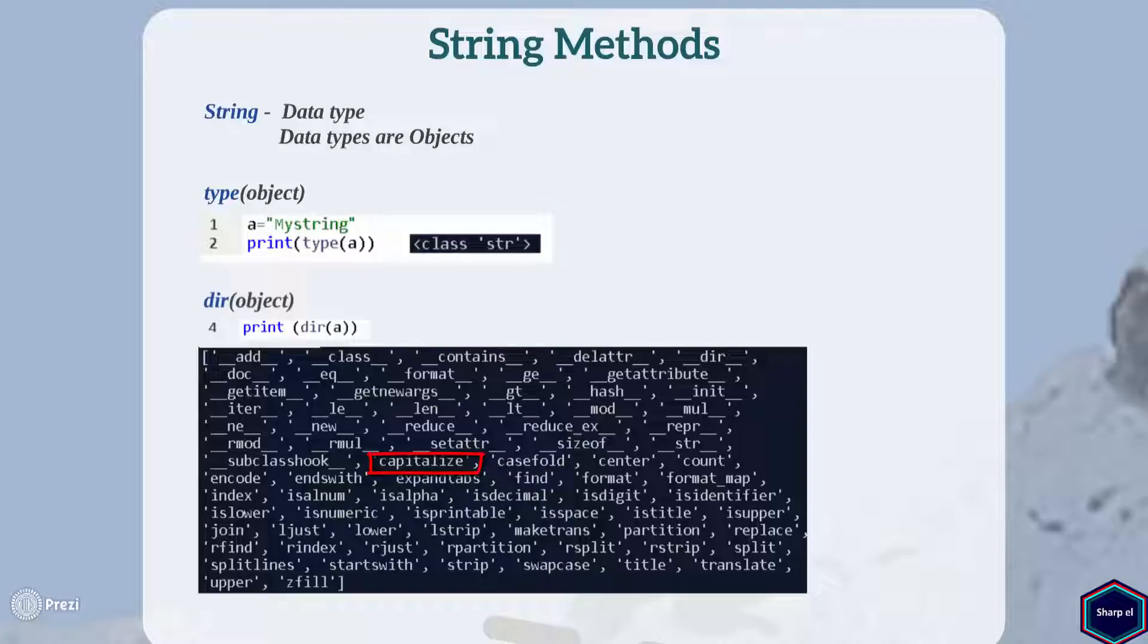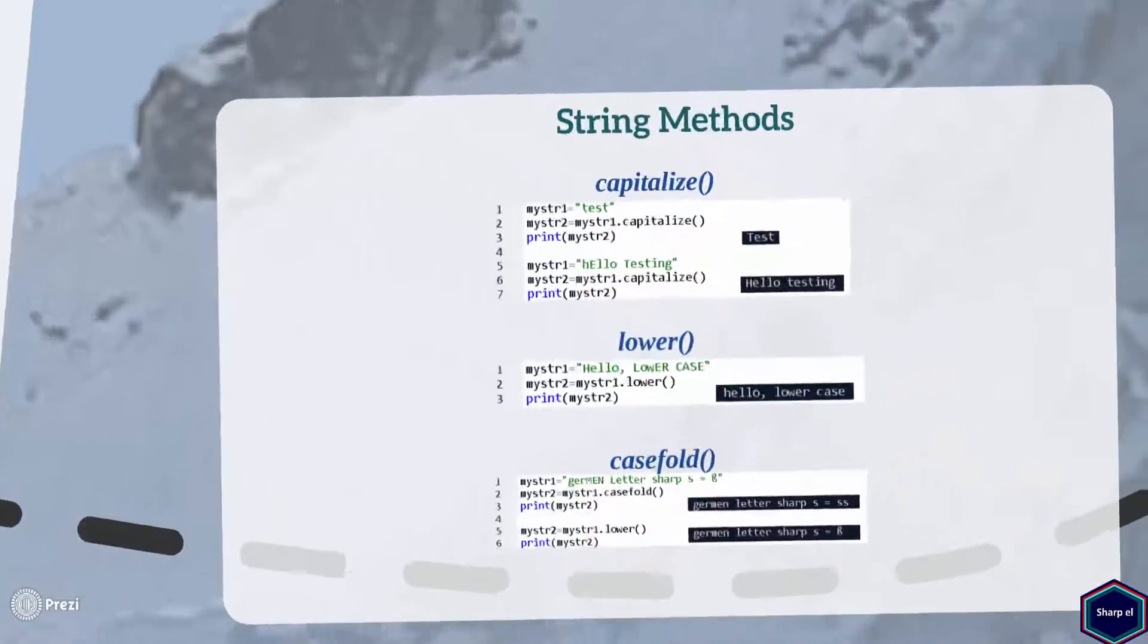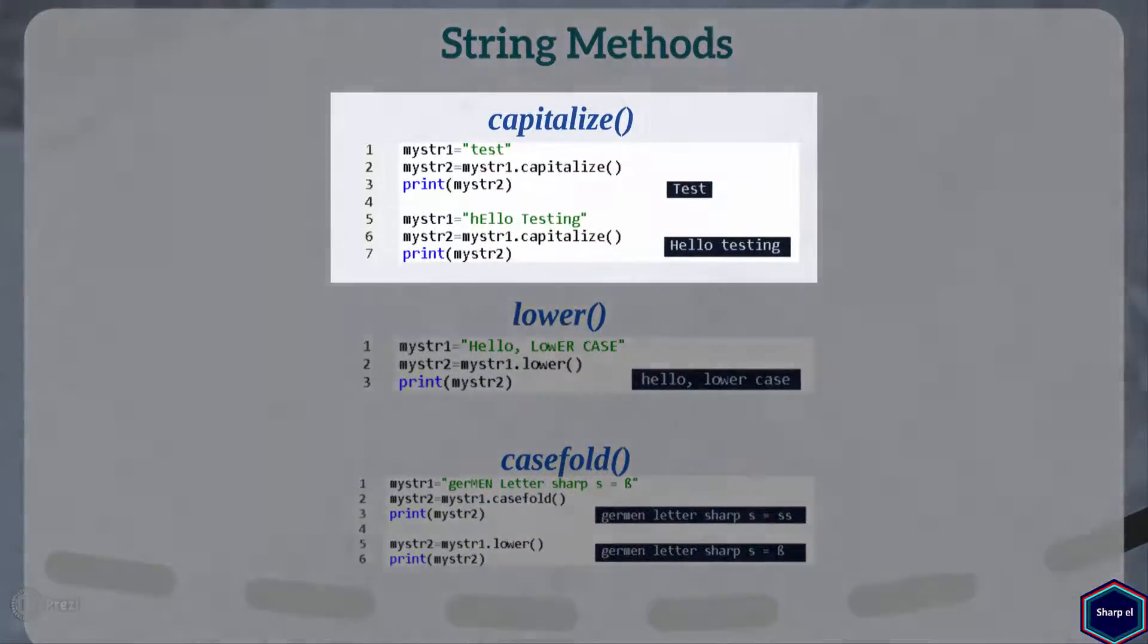So let's start with our first method, Capitalize. The Capitalize method capitalizes the first character in the string. Capitalize method returns only a copy and doesn't change the original string. If the string literal already contains capital letters other than the very first letter, the Capitalize method converts them into lowercase.